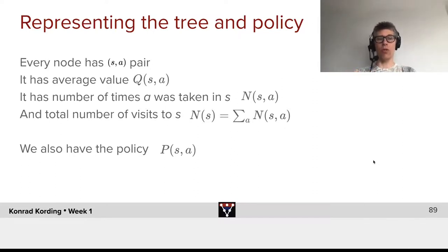So let's first talk about the tree. What we want to do, every node in the tree is really a pair of a state and an action, an s-a pair. For that, what we will want to store is the average value Q of s and a.